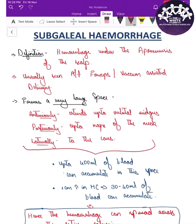Hello friends, on today's session we'll be discussing subgaleal hemorrhage. As you all know, there are three types of extracranial hemorrhage that cause birth injury: one is caput succedaneum, another is cephalohematoma, and this is the third type — subgaleal hemorrhage.